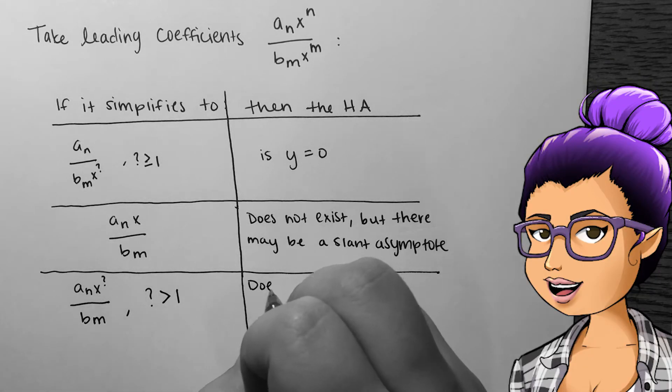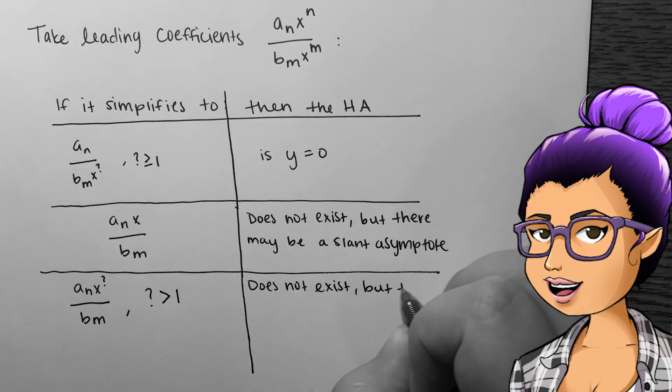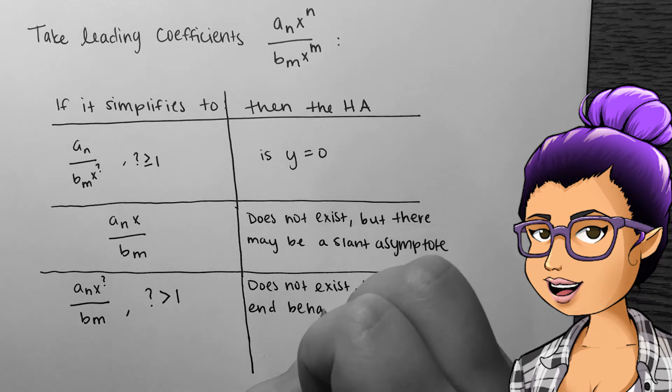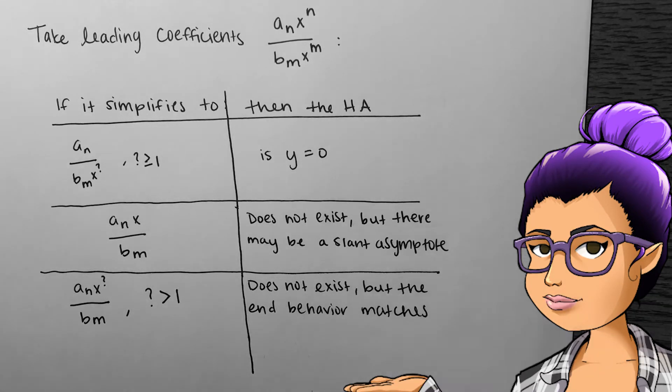If the polynomial we simplify down to has degree larger than one, then our rational function will have end behavior that mimics that polynomial.